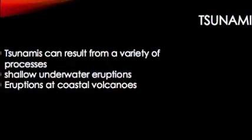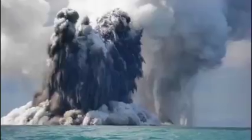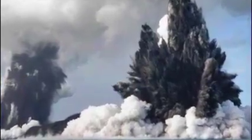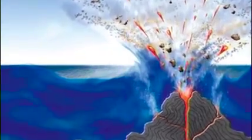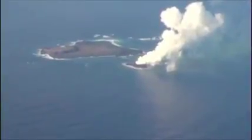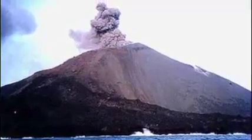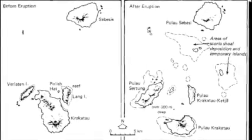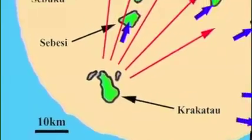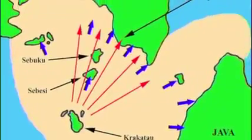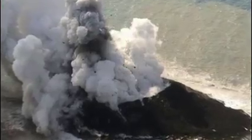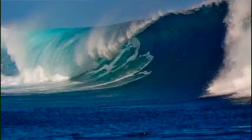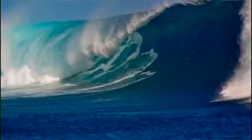Tsunamis can result from a variety of processes associated with shallow underwater eruptions or eruptions at coastal volcanoes. In 1883, the collapse of the island of Krakatoa during a Plinian eruption created an undersea caldera roughly 8 km wide, simultaneously generating a monstrous sea wave that killed more than 36,000 people.